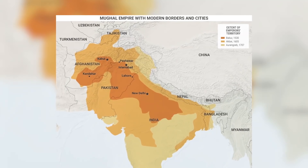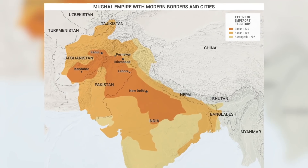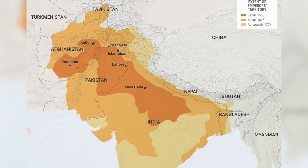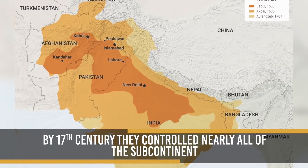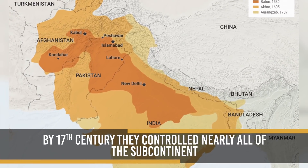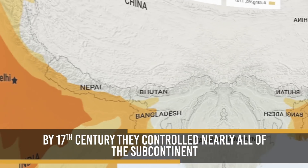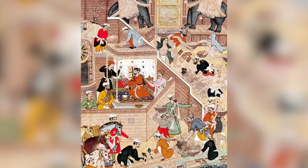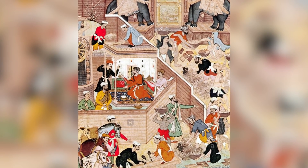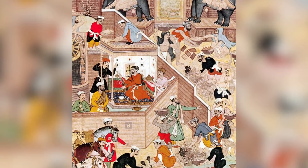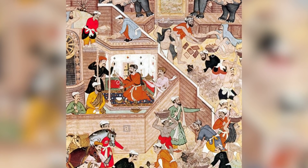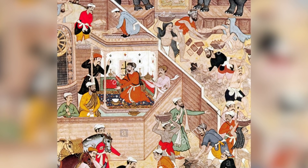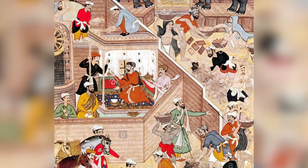From the later half of the 16th century, Mughals expanded their kingdom from Agra and Delhi. By the 17th century, they controlled nearly all of the subcontinent. They imposed structures of administration and ideas of governance that outlasted their rule, leaving a political legacy that succeeding rulers of the Indian subcontinent could not ignore.